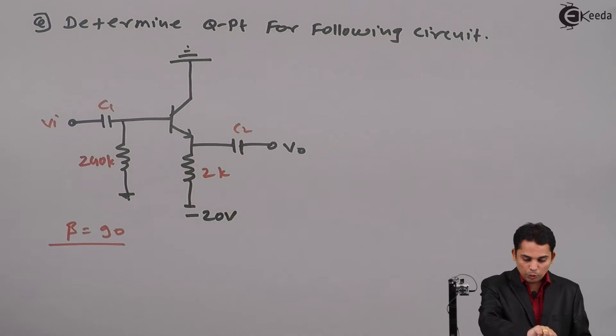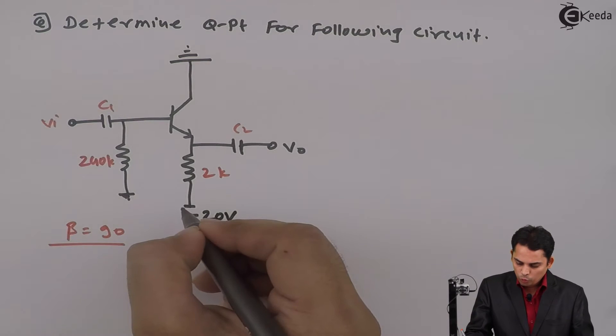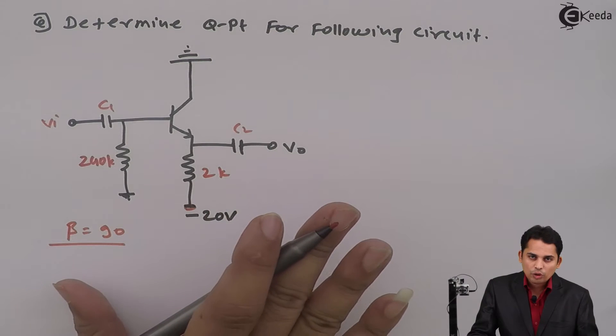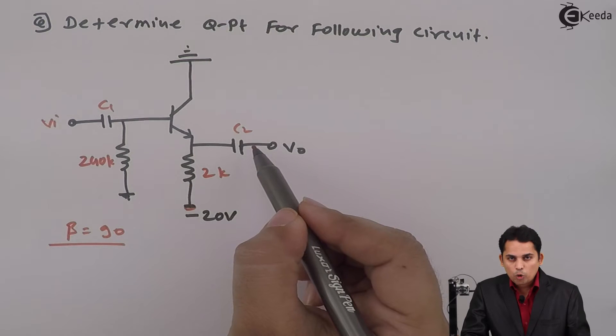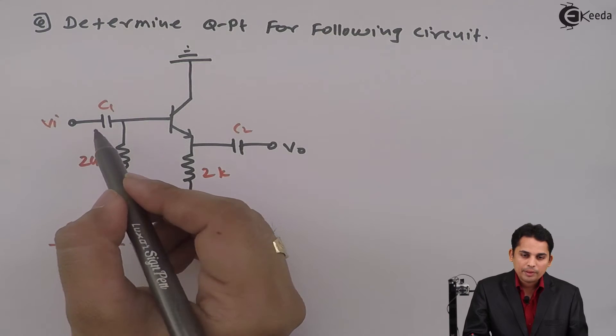Now in this problem, the first thing is to identify whether it is common emitter configuration, common base configuration or common collector configuration. The output is taken at the emitter and input is applied at the base.